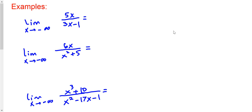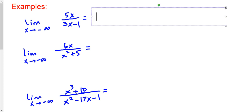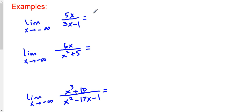If x is going to positive infinity, you would say the answer is 5 thirds — the ratio of the leading coefficients. The answer will be the same, 5 thirds, even when x goes towards negative infinity. One way to look at it is you just look at the dominant terms: 5x over 3x, and then the x's cancel, giving 5 thirds. It doesn't matter if x is going to positive or negative infinity — same answer.